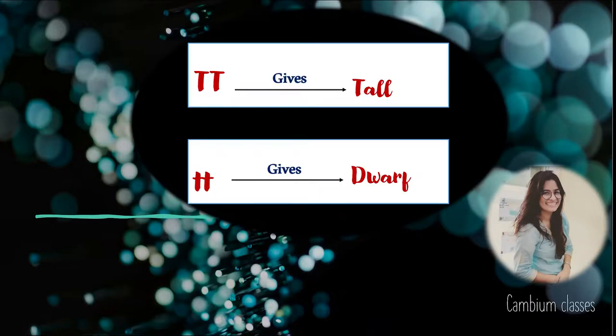So students, as we know capital T capital T genotype gives tall phenotype and small t small t genotype gives dwarf phenotype. But can there be a special condition in which two completely different genotypes give the same phenotype?